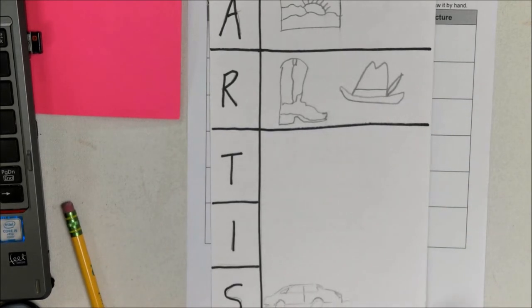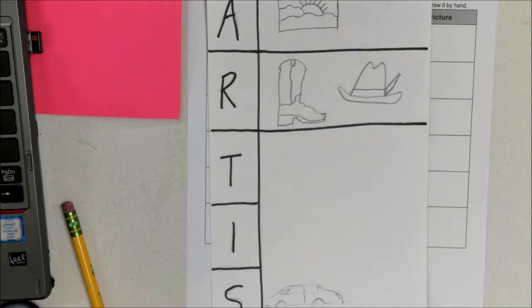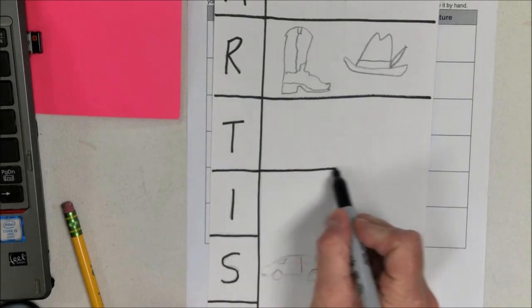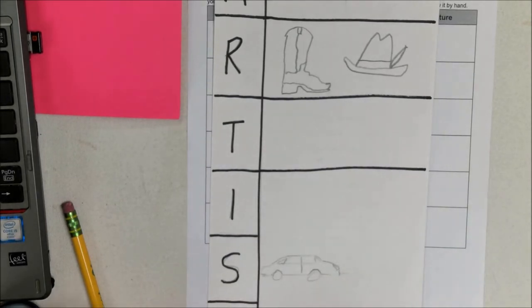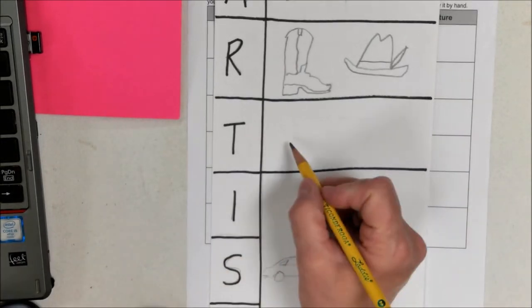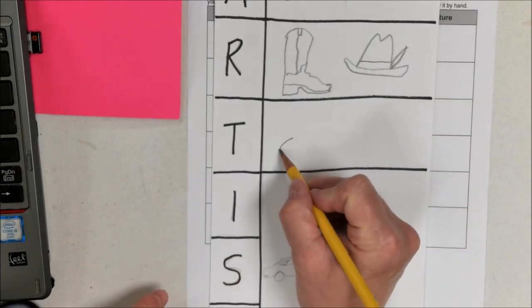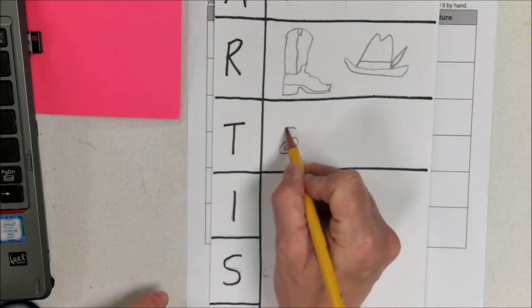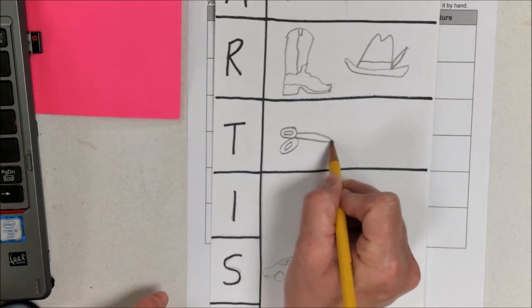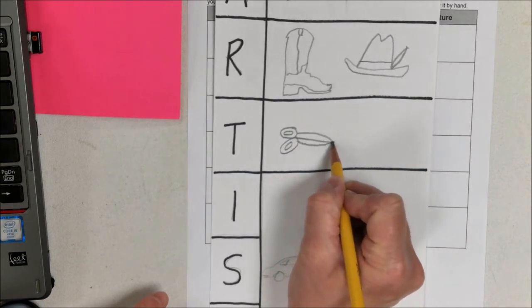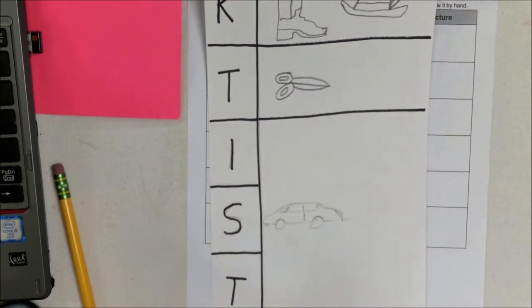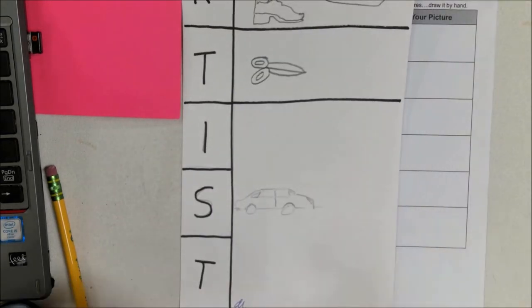T is a tool that an artist uses. So this could be a pencil, marker, pair of scissors, bottle of glue, really anything related to art that you would use in art class. And so I'm gonna make a pair of scissors.